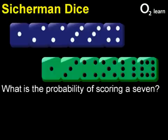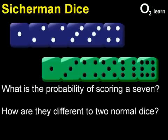See if you can use the methods from before to work out what the probability is of scoring a seven, and how they're different to two normal dice. Good luck, and thank you for listening.